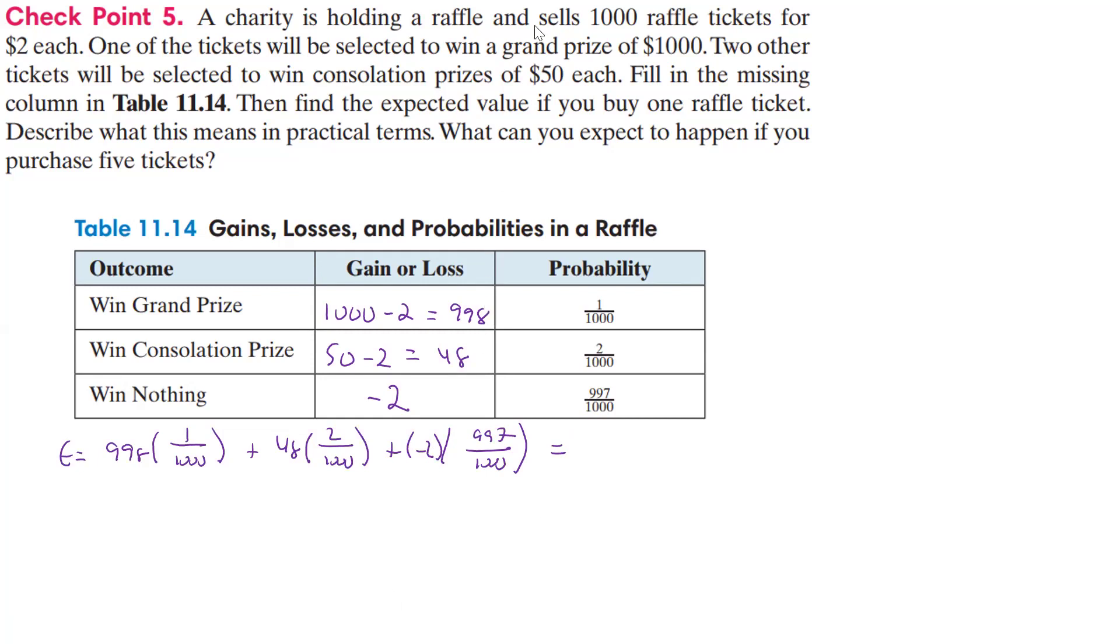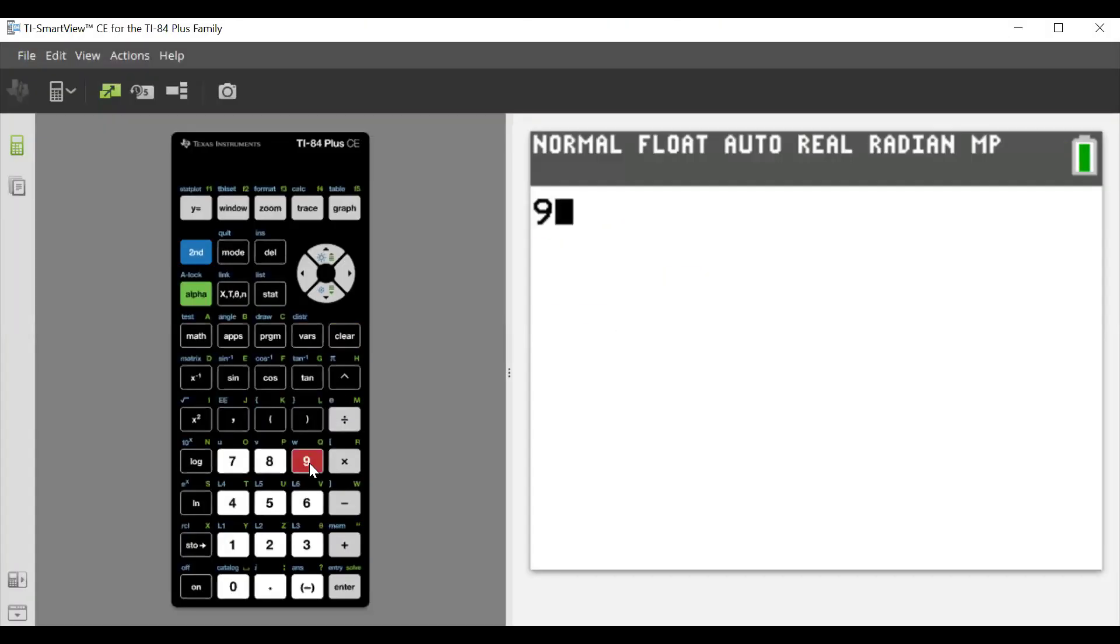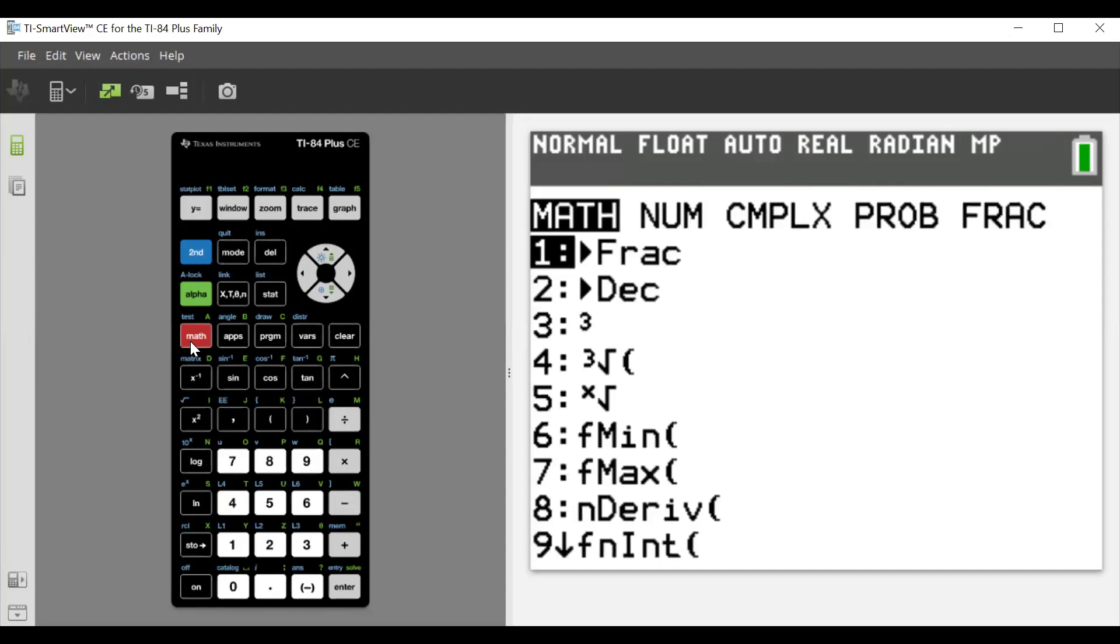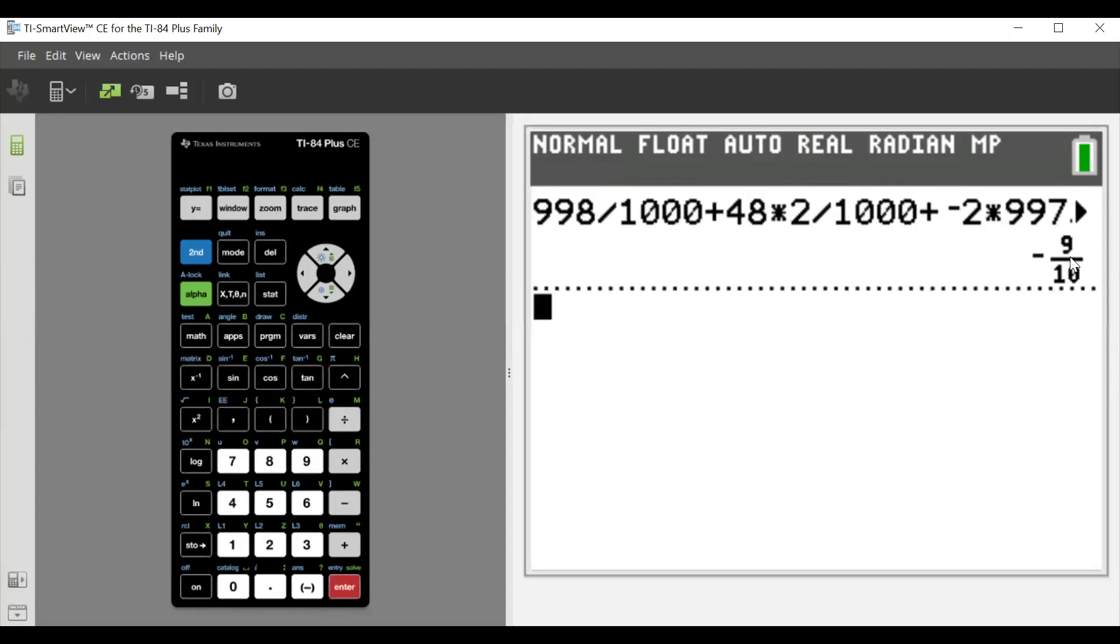And so if we do that, we're going to clear all that out. So 998 divided by 1,000, and then we had plus 48 times 2 divided by 1,000, and then plus, then we had a negative 2, and then that was times, and then we had 997 divided by 1,000, and hopefully it'll give us the fraction, and it does, negative 9 tenths.